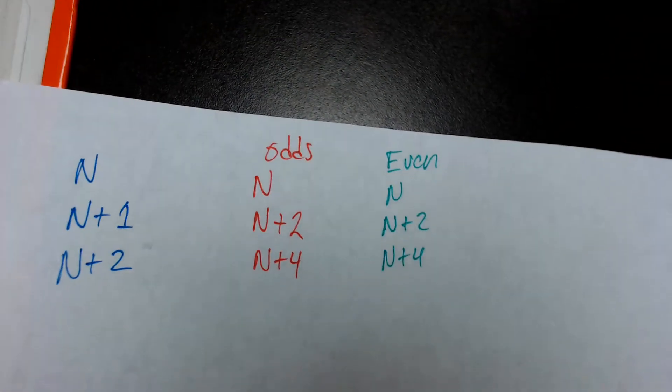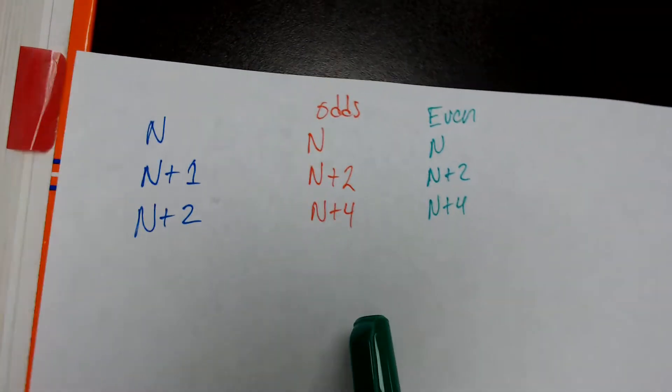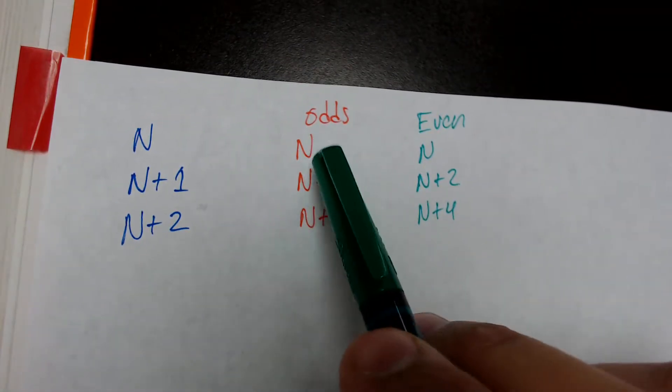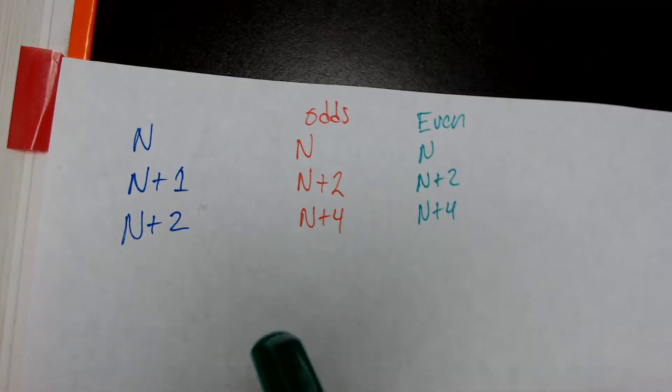So, please, please do not forget that. Because people have a tendency when they're doing odds, they want to write n, n plus 1, n plus 3. Don't do that.